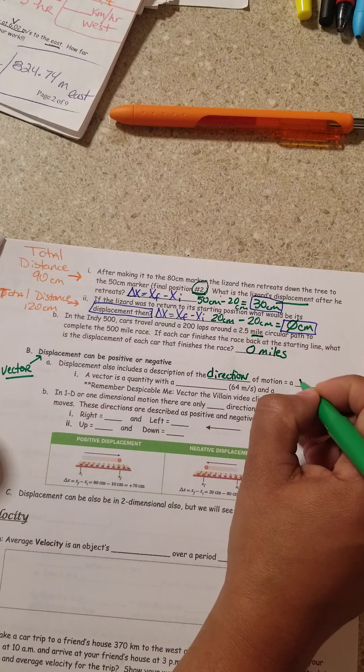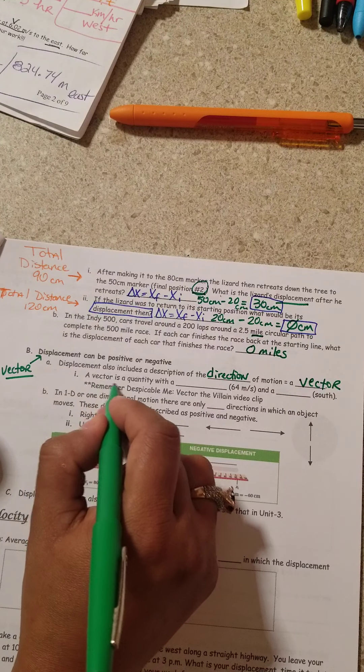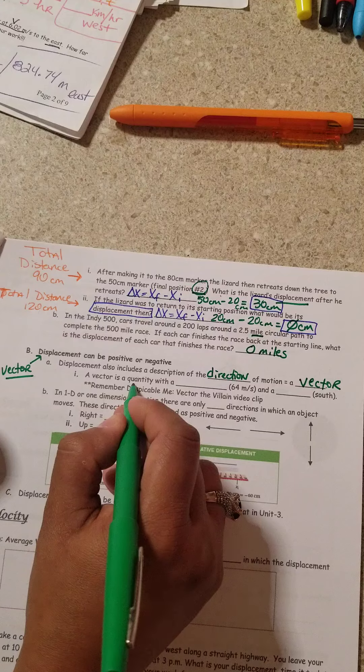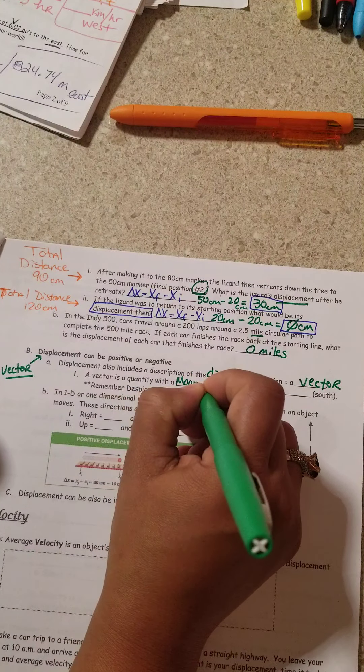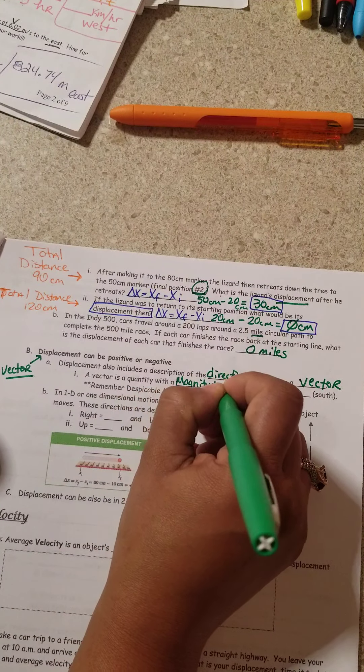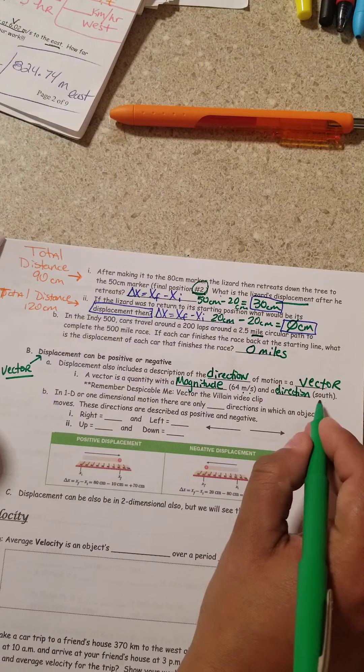Which equals that it is a vector. A vector is a quantity with a, remember that word, magnitude. For an example, 64 meters per second. And a direction, which would be south.